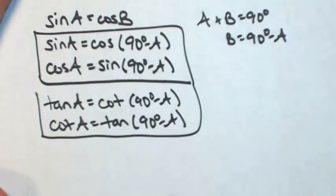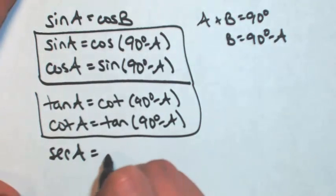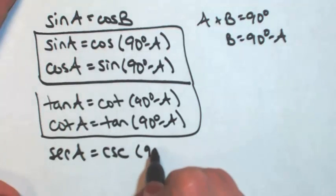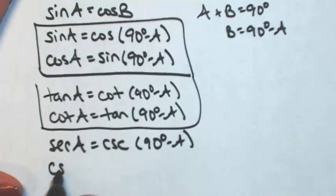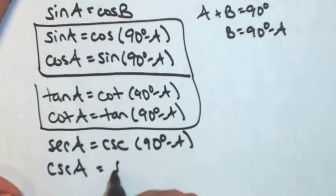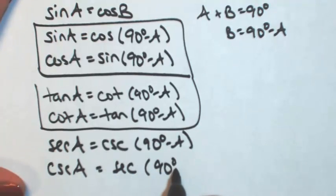And for the other pair of co-functions, secant of angle A is cosecant of B, which is 90 minus A. And cosecant of angle A is secant of 90 minus A.